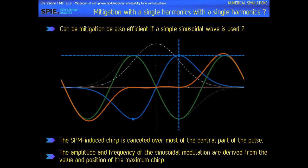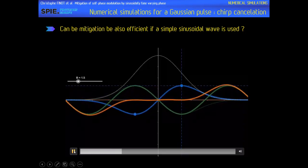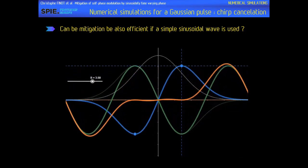It is also quite easy to find the parameters experimentally, because the sinusoidal modulation should have an amplitude identical to the maximum of the chirp induced by SPM. Regarding the frequency of the sinusoidal modulation, it will be directly linked to the position of the maximum of the chirp. So we can find them very easily analytically, and as we can see, if we use this strategy it will work very well over a wide range of B values.